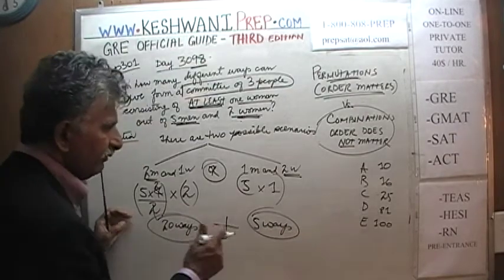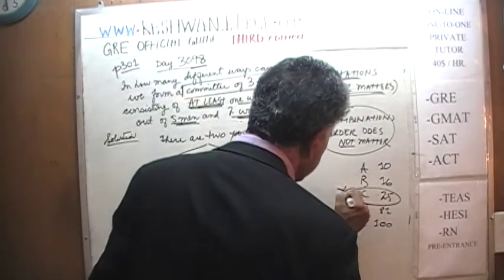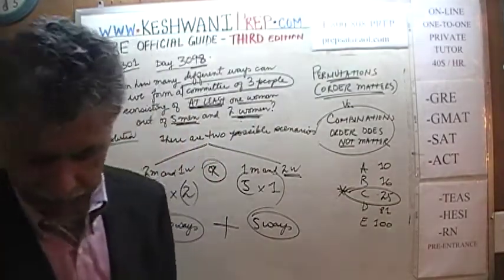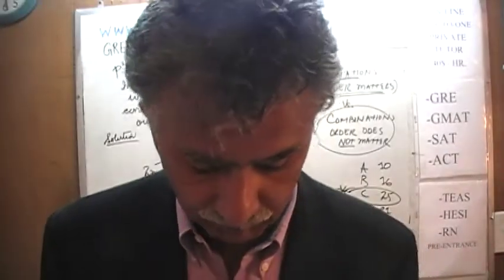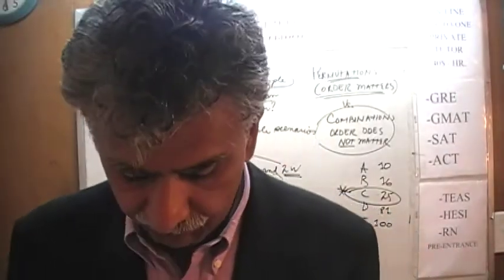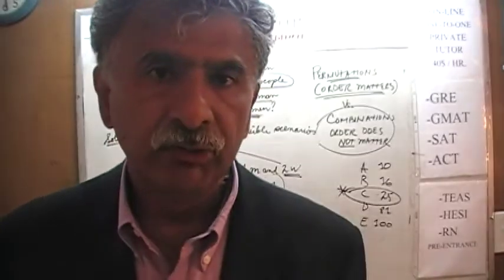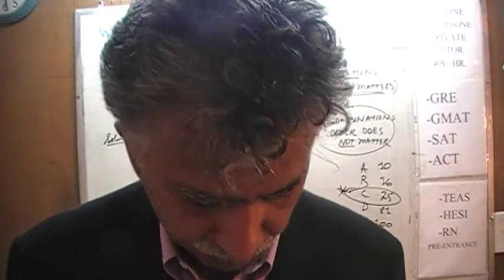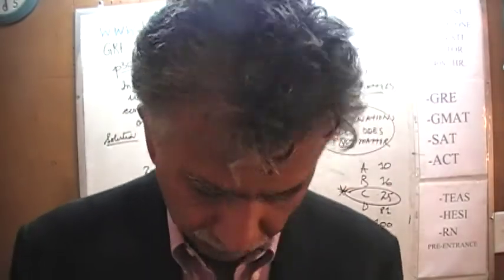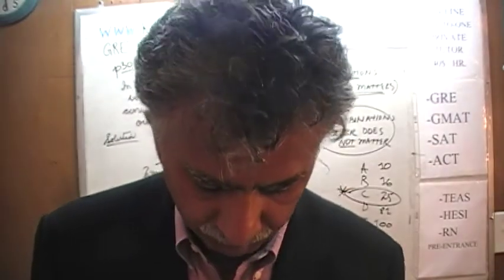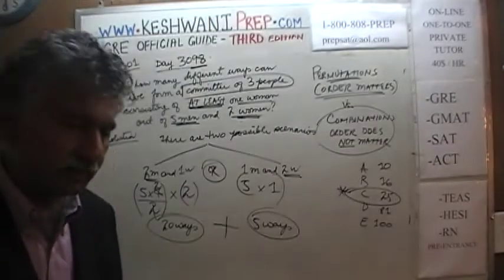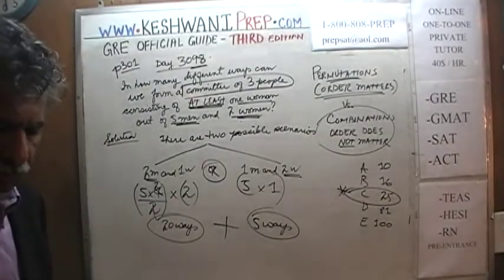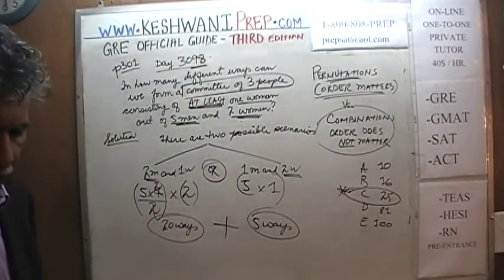There are twenty-five ways in total — twenty-five ways we could have fulfilled our condition of having at least one woman on the committee. Just one more problem. Very similar to it, yet a little bit different, so that you get used to what we may encounter in the exam.